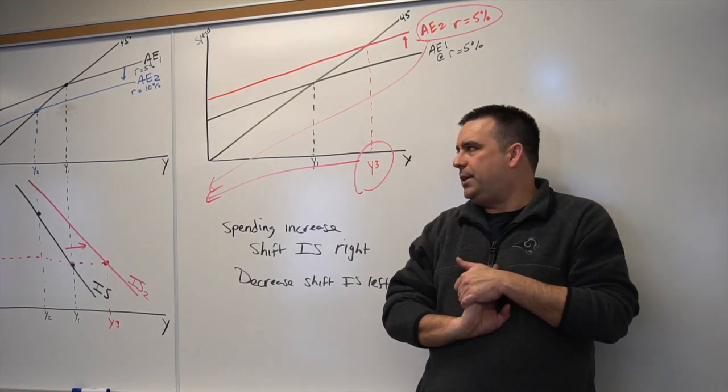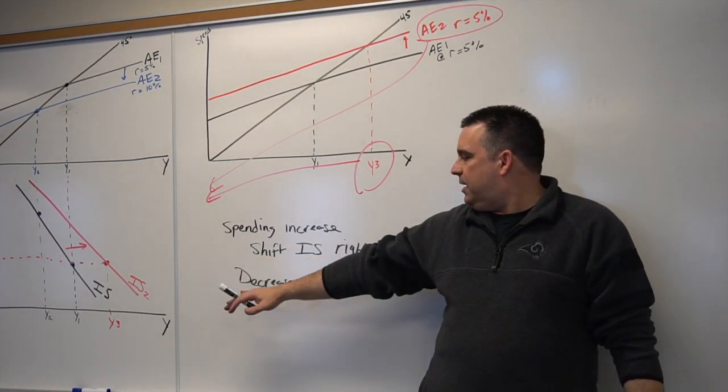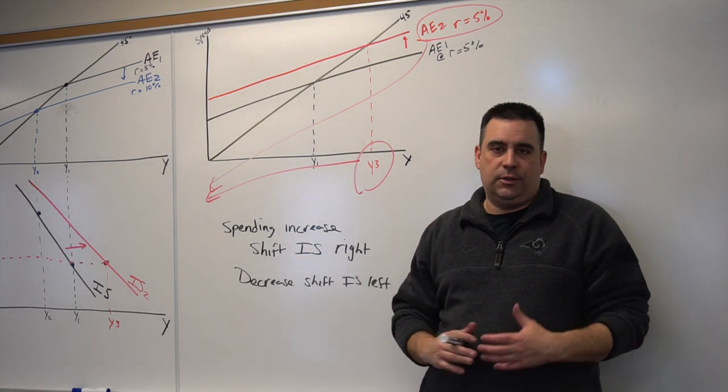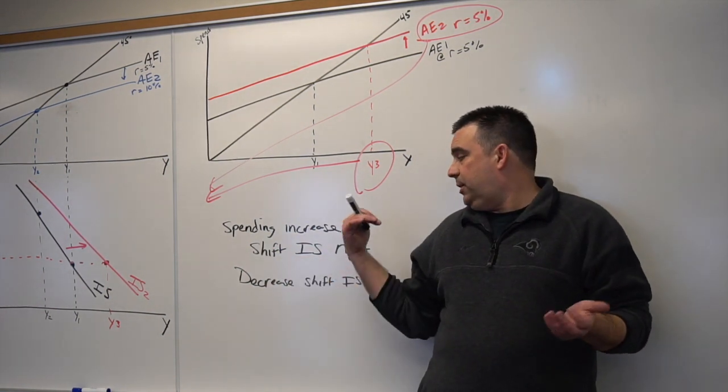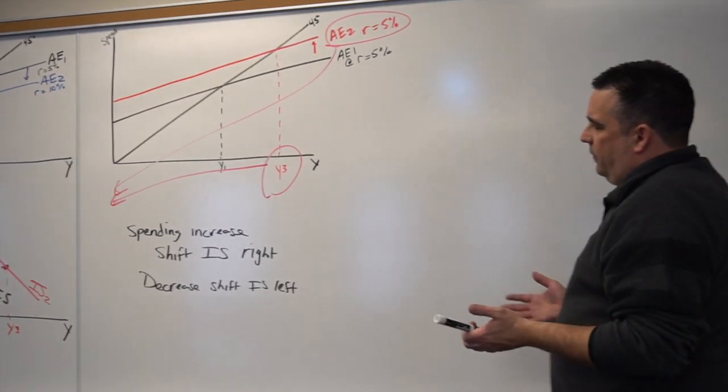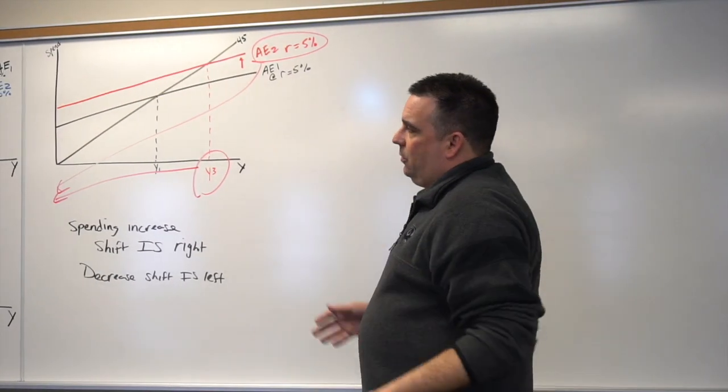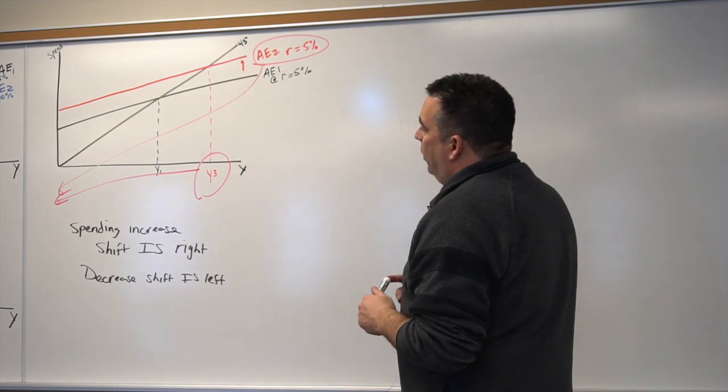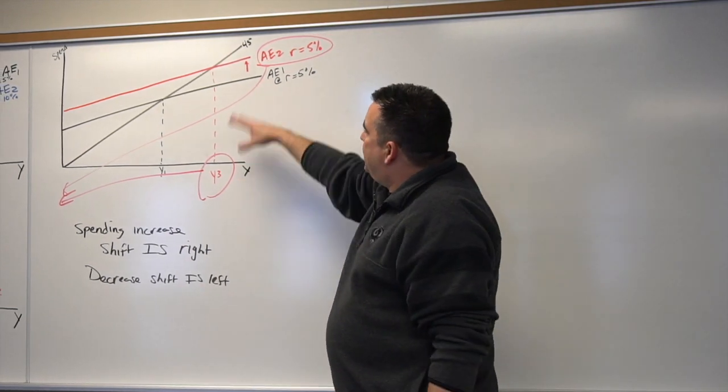That does kind of mess this model up a lot, but again, that's only one situation. I think for the most part, we're going to be pretty safe just following this rule: spending increase shift IS right, spending decrease shift IS left. Which kind of makes the IS curve pretty simple.